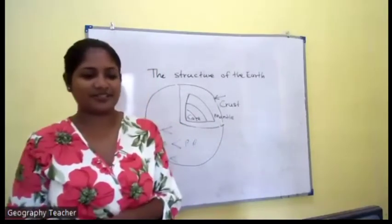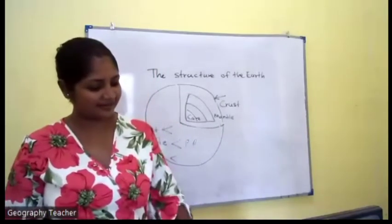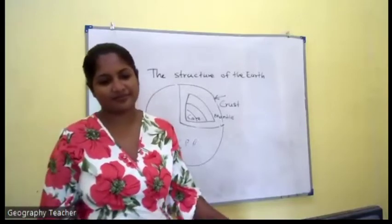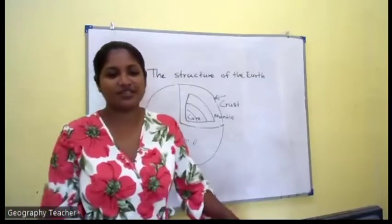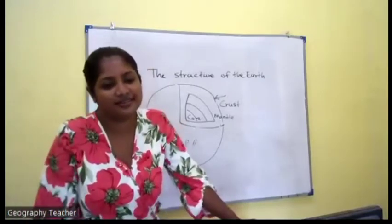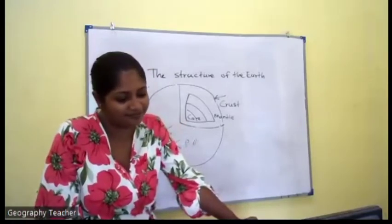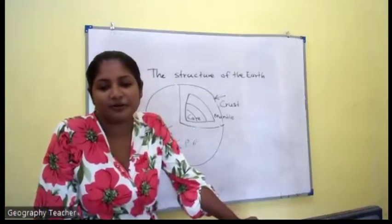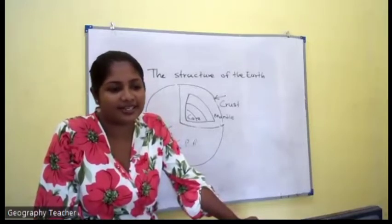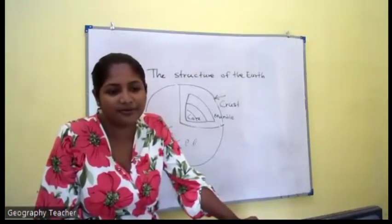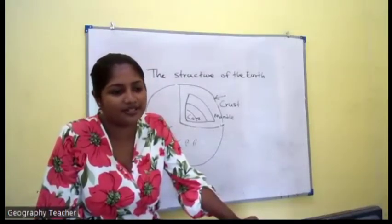Another two students can take the mantle — Roshini and Sammani. Then for the core: Sadini, Koharu, and one more student.